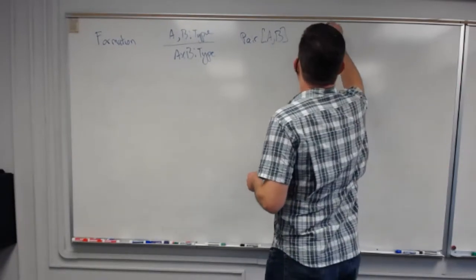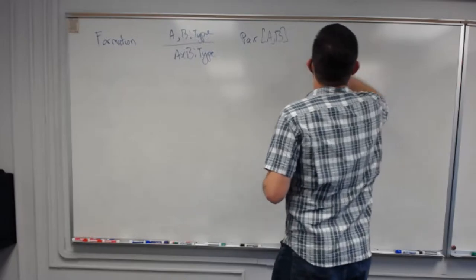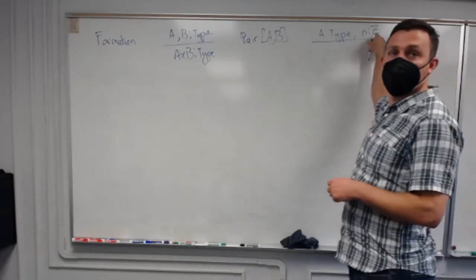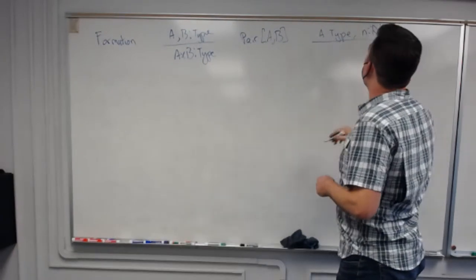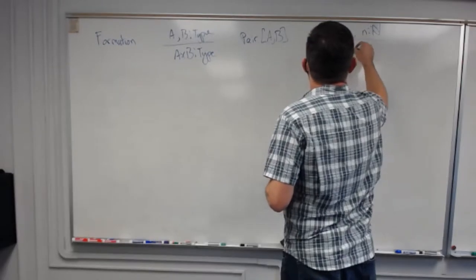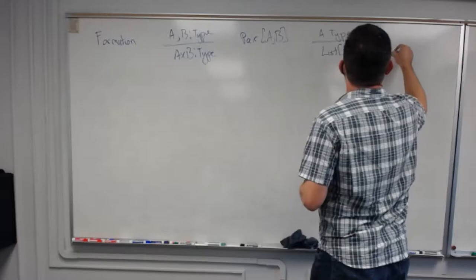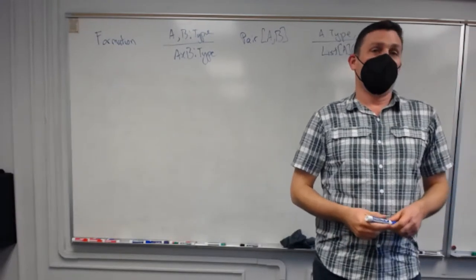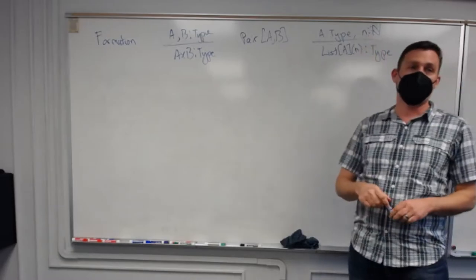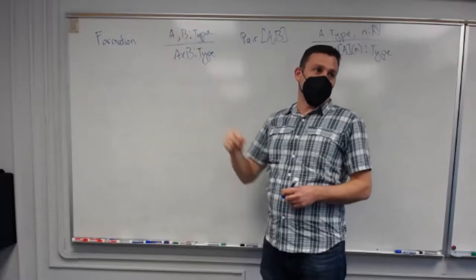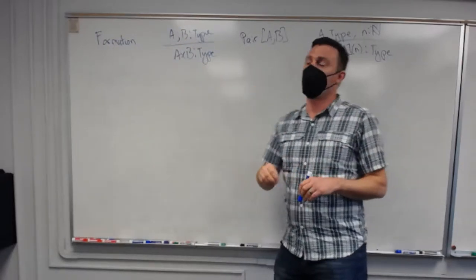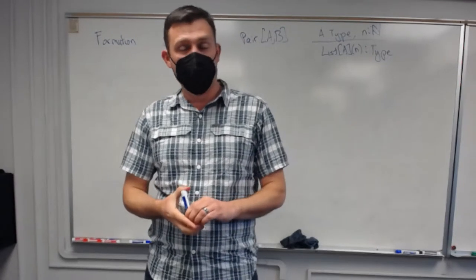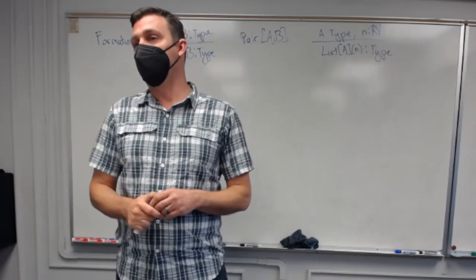With dependent types, we allow extra information. We can have not only types - I might have A as a type and a natural number N, which is a term of some type - and I might make a list containing elements of type A and having length N. This is a type, a piece of data of type 'type', and it's brand new. You depend it because you're depending on terms.